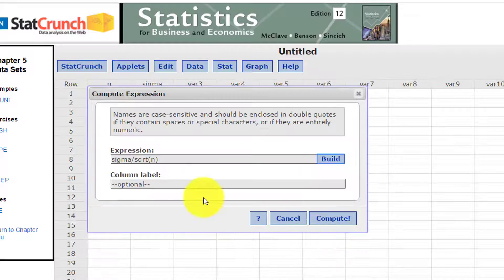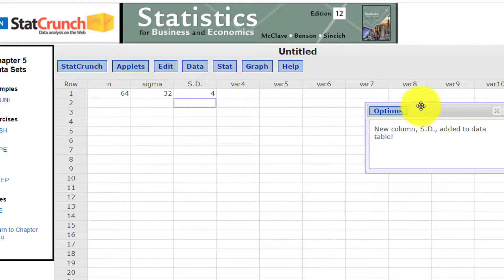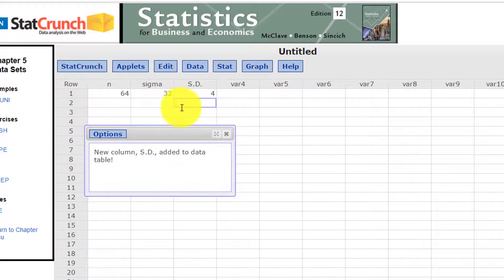I'm going to click OK. I'm going to label this S.D. for standard deviation and click compute. And of course I know it's trivial, but we've got a standard deviation of 4.